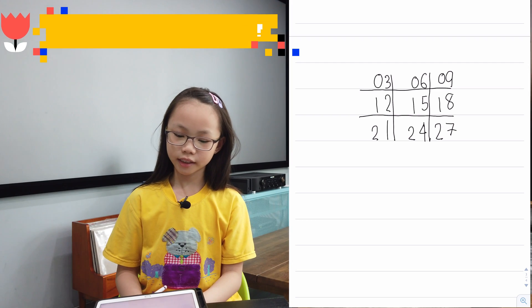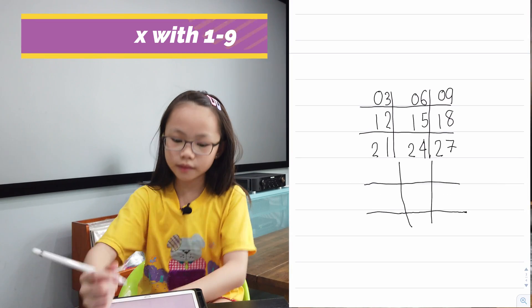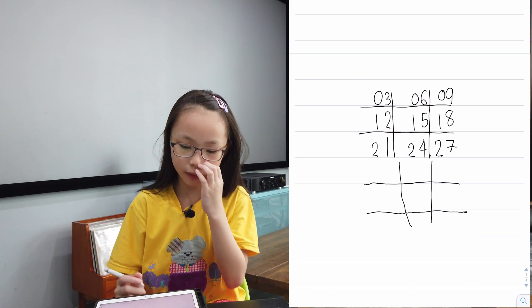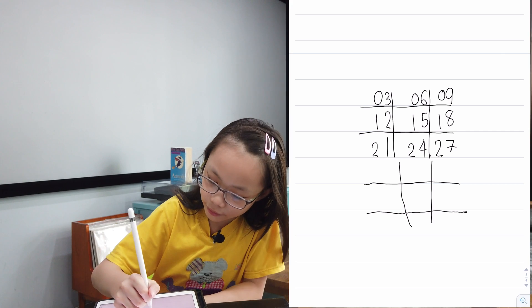Now we need to draw another tic-tac-toe board. We're going to write the numbers 1, 2, 3, 4, 5, 6, 7, 8, and 9 like this.